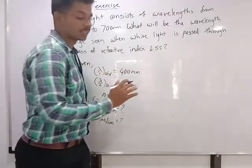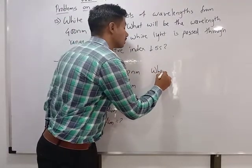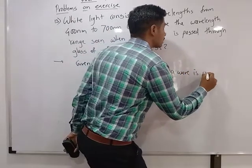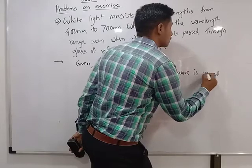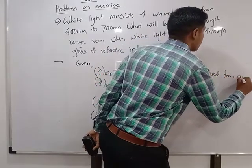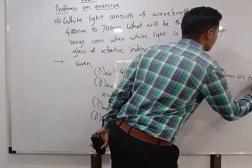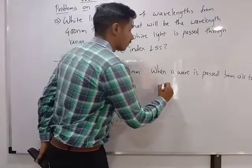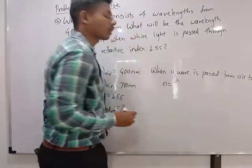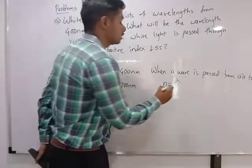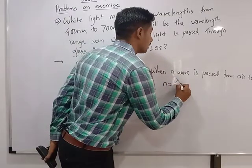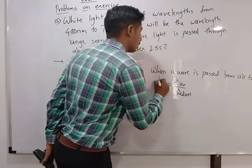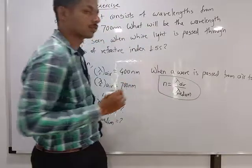When a wave passes from air to a medium, the formula is: refractive index of air with respect to medium equals lambda in air divided by lambda in medium. That is the formula we will use.